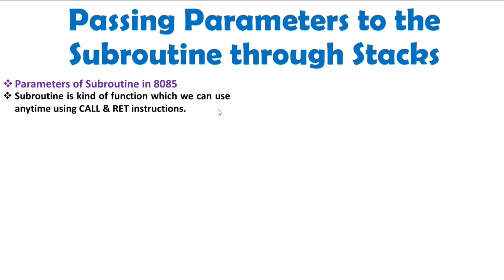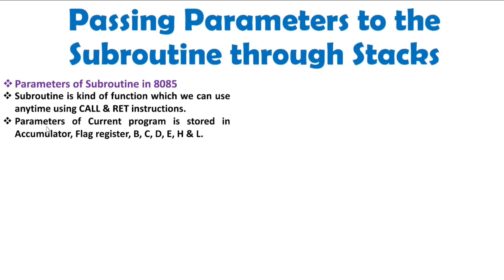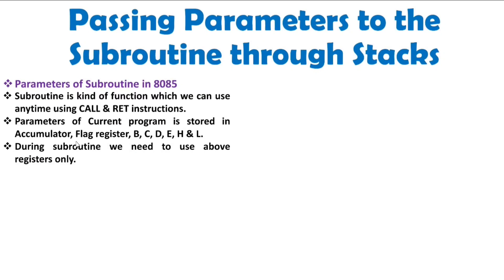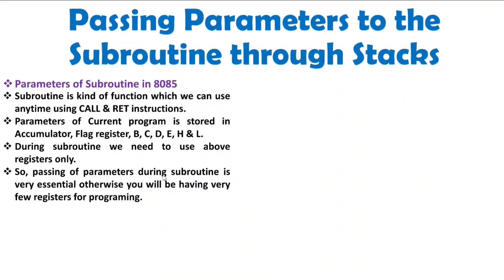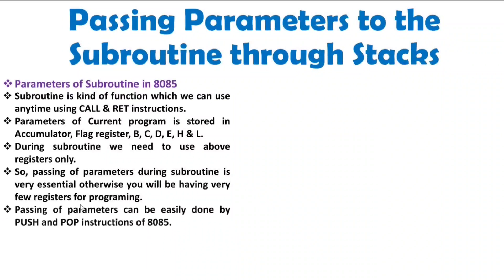A subroutine is a kind of function which we use with the CALL and RETURN instructions anytime in a program. Parameters of the current program are stored in the accumulator, flag register, B, C, D, E, H, and L registers, as this is the programming model of 8085. During a subroutine, we need to use these registers, but what if they are not available? We need to load these parameters somewhere so the registers are free for the subroutine. Passing parameters can be easily done using PUSH and POP instructions of 8085.